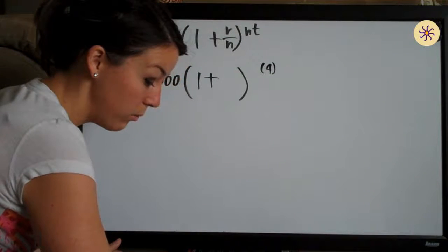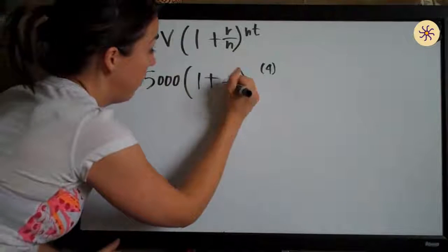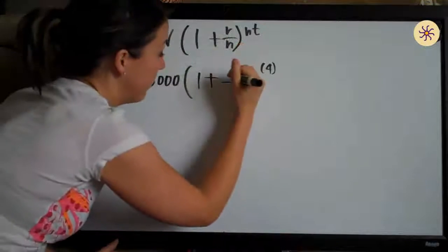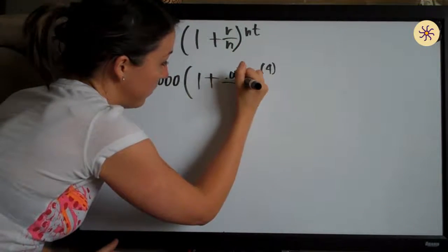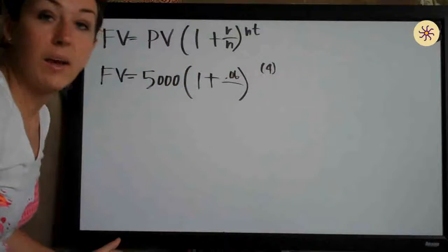After four years, an annual interest rate of 6%. So the interest rate r is 6%, which is 0.06, and we are compounding monthly.